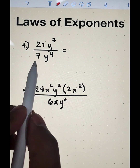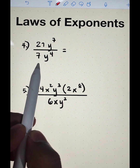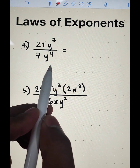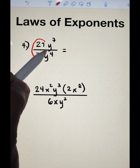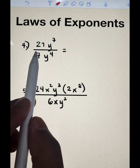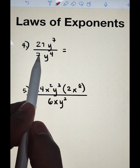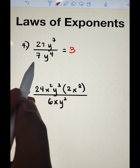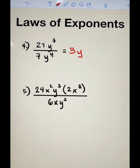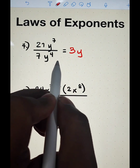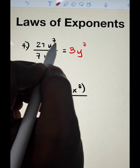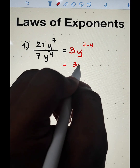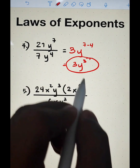Now let's go with item number four. For number four, this one is a division, so we apply the quotient rule. We have 21y raised to 7 over 7y raised to 4. First, simplify the coefficients: 21 over 7, which is 21 divided by 7, equal to 3. For the variable, applying the quotient rule, copy the same base and subtract the exponents starting with the numerator: 7 minus 4. Simplifying gives us 3y raised to the third power, and this is the answer.